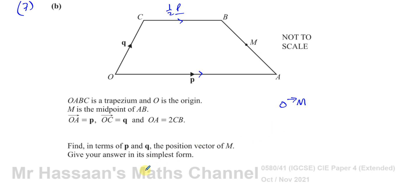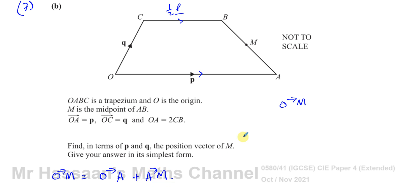So the position vector of M means the vector from O to M. We can think of O to M as going from O to A and then A to M — that is, O to A plus A to M. O to A is no problem, that's p.